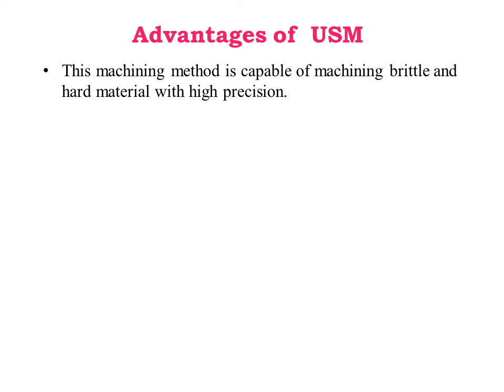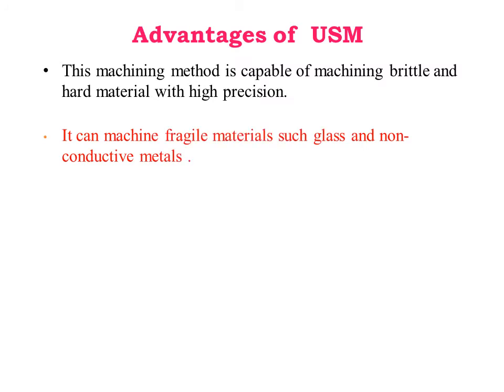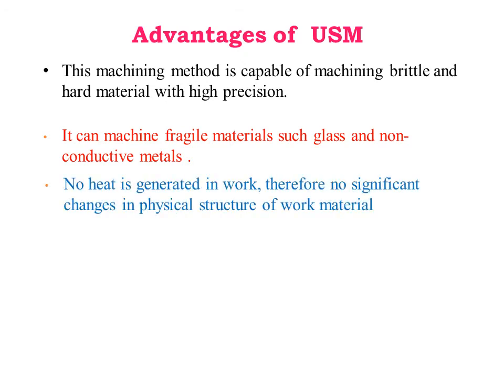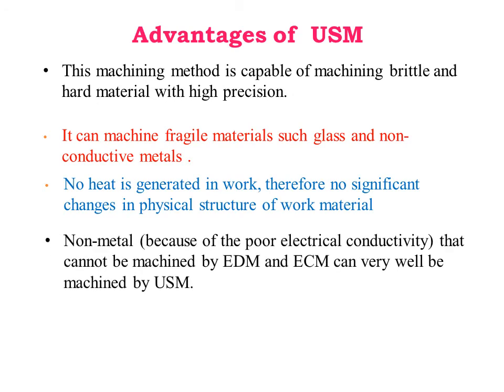USM is capable of machining brittle and hard materials with high precision. It can machine irregular materials such as glass and non-conductive metals. No heat is generated in the work, therefore there are no significant changes in the physical structure of the work material. Non-metals that cannot be machined by EDM and ECM can very well be machined by USM. It is a burr-less and distortion-less process.